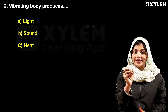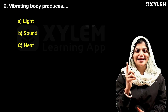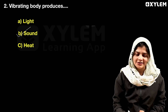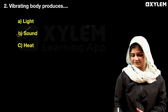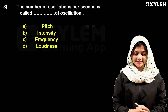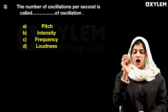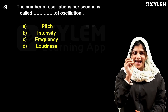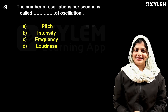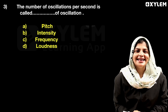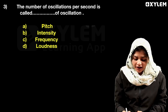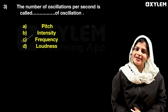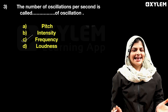Next question: a vibrating body produces sound. The number of oscillations per second is called the dash of oscillation. The answer is frequency.